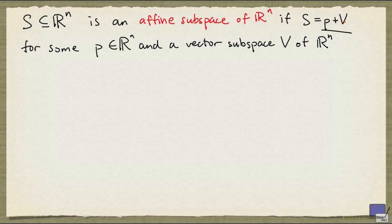Here, P plus V means the set of all possible vectors obtained from P plus another vector in V. As you might see from this definition, an affine subspace is simply a vector subspace translated.